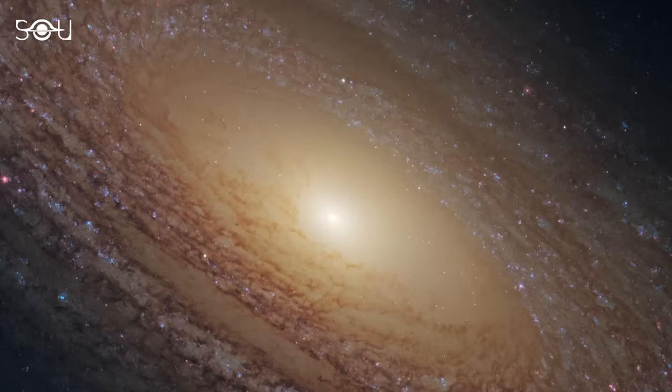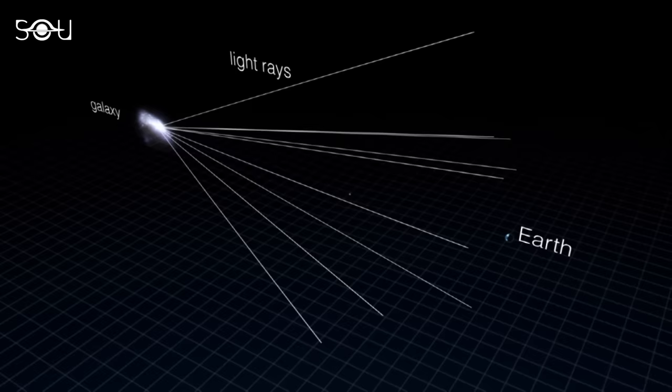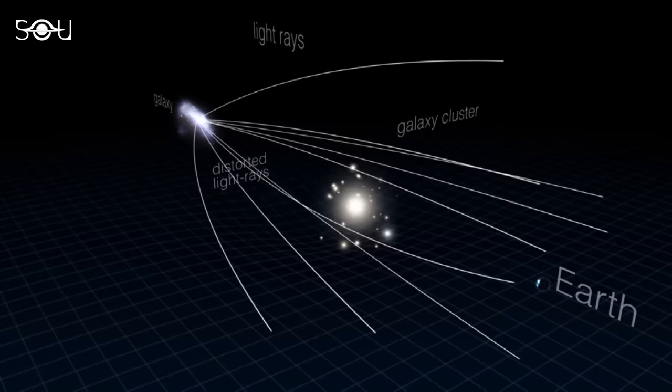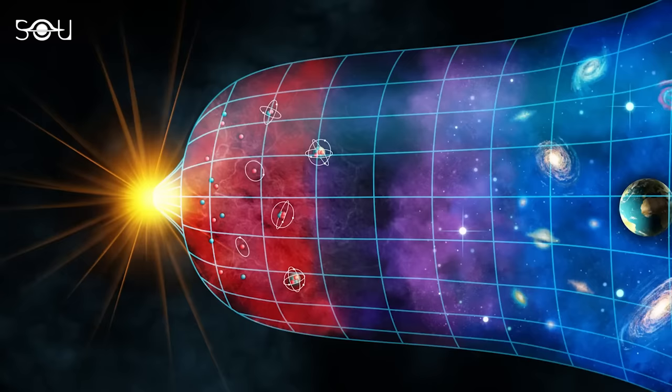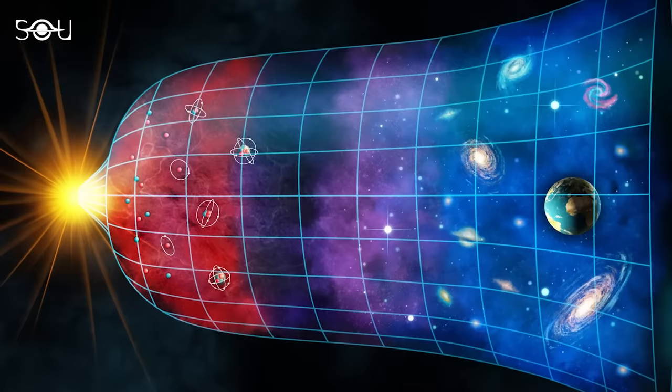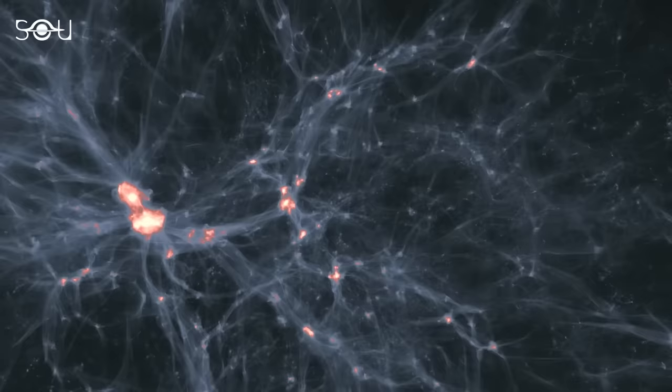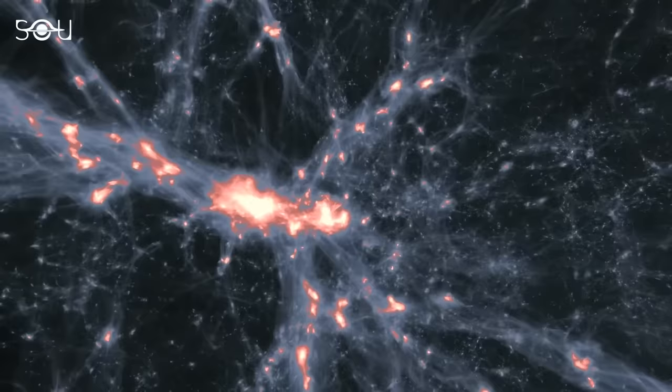With time, more evidence in favor of dark matter poured in. First, in the 1980s, the observation of gravitational lensing of background objects by galaxy clusters supported the presence of dark matter. Then, in the 1990s, measurements of the cosmic microwave background and the large-scale structure formation of the universe hinted that something like dark matter must exist. Specifically, these observations showed that the universe is much more clumpy and filamentous than one would expect if it were composed of visible matter alone.